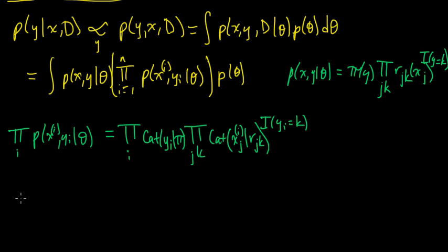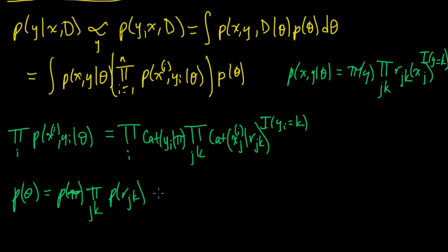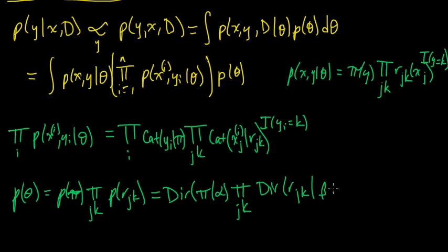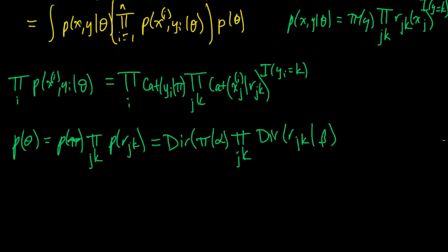Now we need an expression for the prior P(θ). That equals the product of P(π) times the product over all j and k of P(R_{j,k}). Each of these is a Dirichlet, so we write: Dirichlet(π | α) times the product over j and k of Dirichlet(R_{j,k} | β). Now we multiply this likelihood part times the prior.